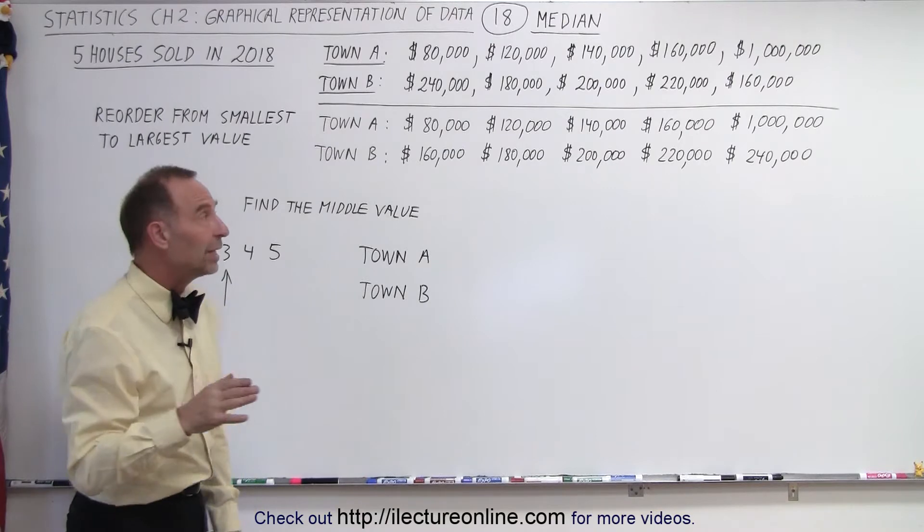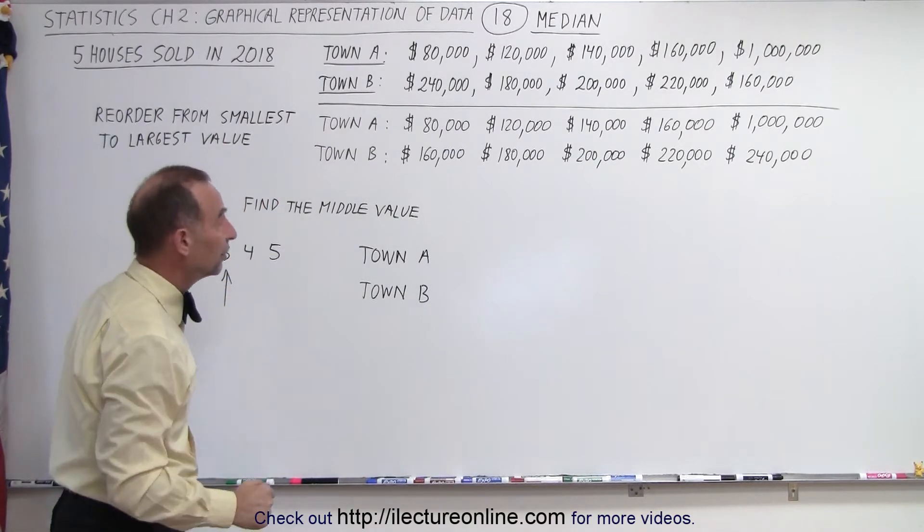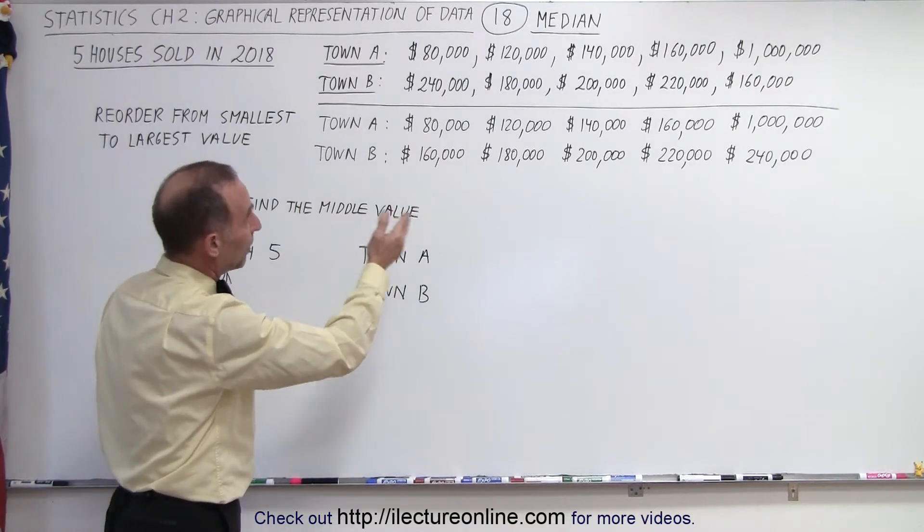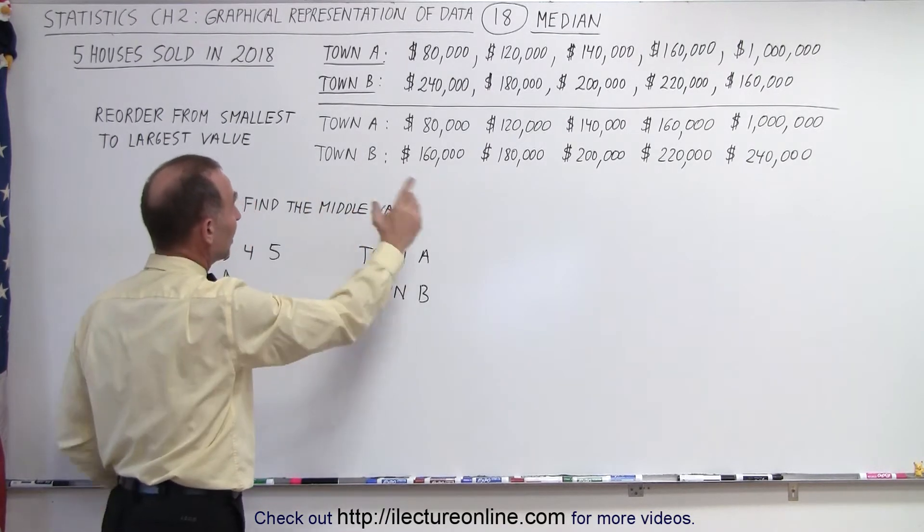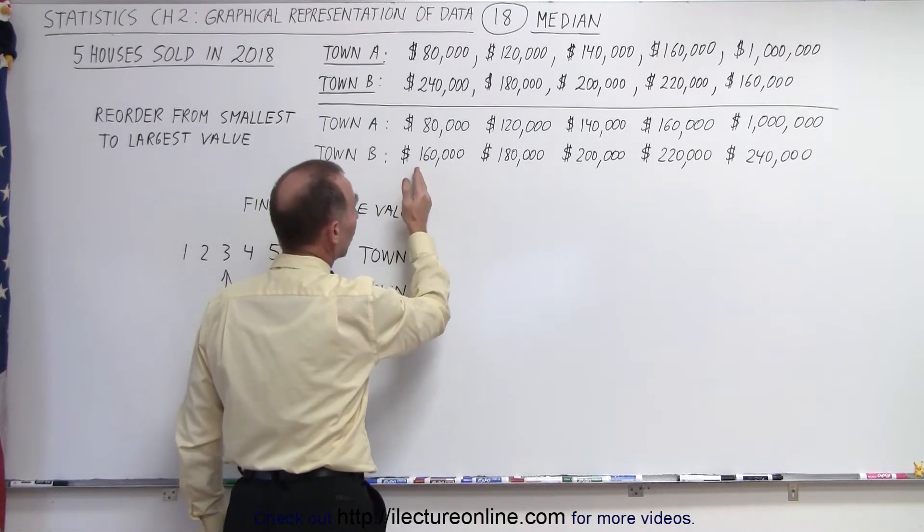Now what we need to do first is rewrite those data sets from smallest to largest value. For town A the data set was already written that way but we repeated it, but for town B we had to rearrange them so we could write the house prices from lowest to highest.